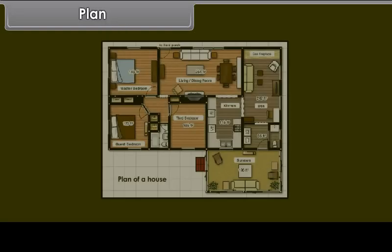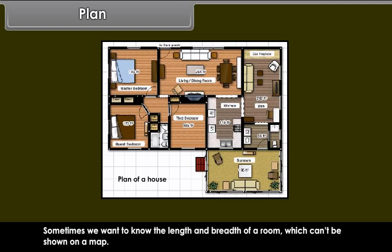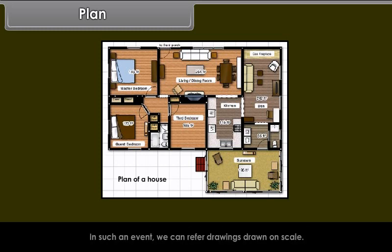Plan: A plan is a drawing of a small area on a large scale. A large scale map depicts much information. Sometimes, we want to know the length and breadth of a room which can't be shown on a map. In such an event, we can refer drawings drawn on scale. It is known as a plan.